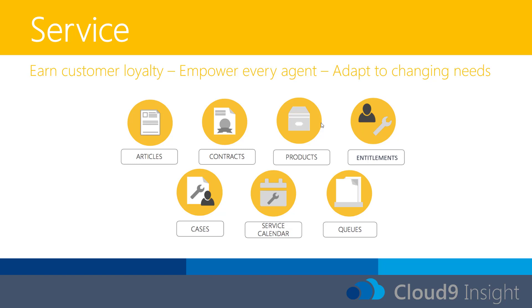Entitlements and contracts basically enable you to meet things like SLAs or support certain contracts. If you have different levels of support contracts, you're able to let the system manage that in terms of number of tickets, time taken, or the products that you may be able to service. The final piece is articles — one of the newer functions inside Dynamics that we use a lot at Cloud9 is the knowledge base articles. These are customer-facing or internal pieces of material which can help you solve a query that's often asked or common issues that you may be seeing.